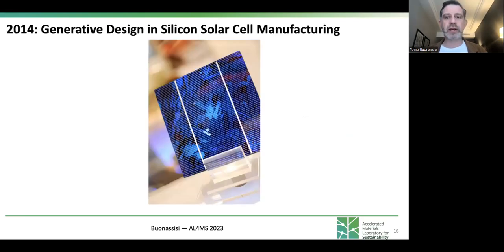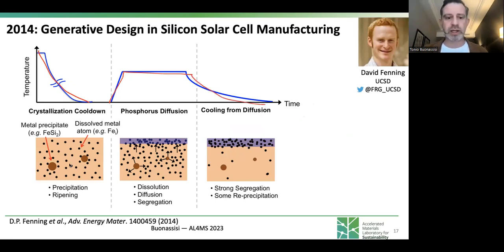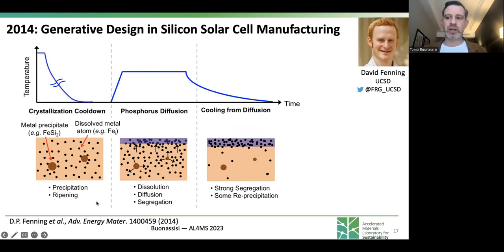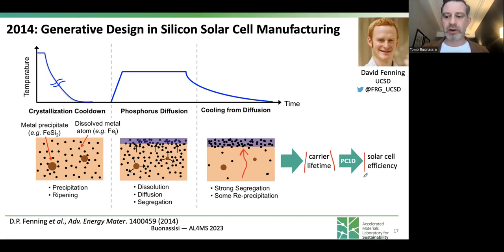Let's take an early example from our lab 10 years ago, where we used generative design for silicon solar cell manufacturing. The goal was to take a time-temperature profile and optimize the process — cooling down from crystallization, phosphorus diffusion creating the junction that separates charges in a solar cell, then cooling down. We modeled defect evolution using a simulator called I2E (impurities to efficiency) and ran it in a generative mode using a genetic algorithm. One initial time-temperature profile would be mutated, the fitness of each profile evaluated, the least fit removed, and the next generation spawned from the fittest profiles.